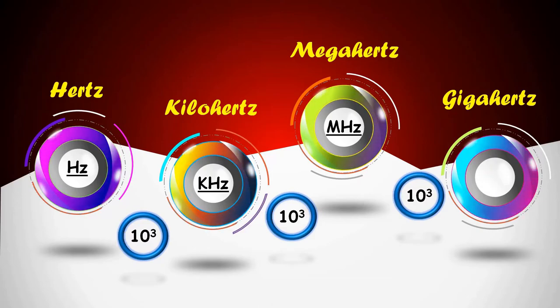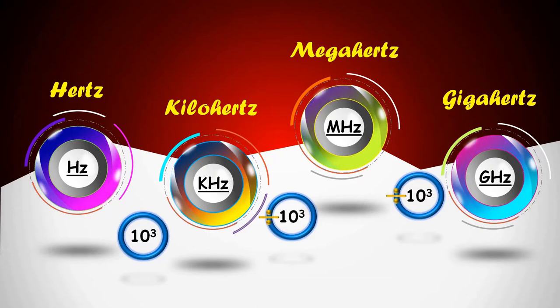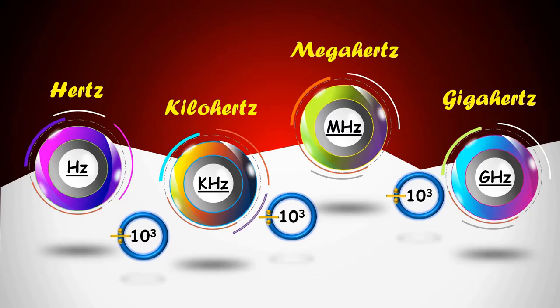When converting from Gigahertz to Hertz, we need to divide by 10 to the 3 at each step.